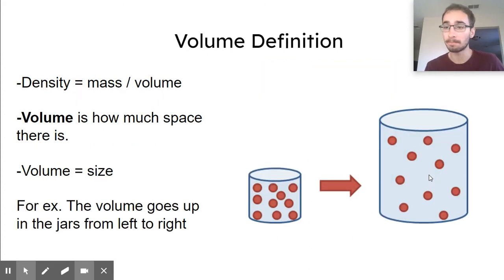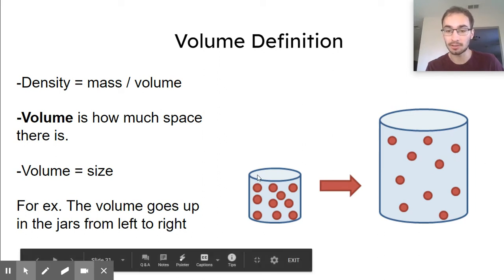And then volume. Volume is a new word. I want you to think of volume as how much space there is. Another word for volume could be size but for 3D objects. So for example the volume goes up in the jars so less volume more volume. The volume goes up as you go from left to right.